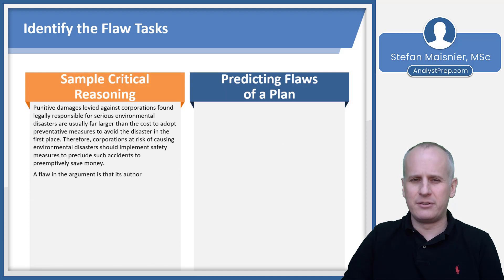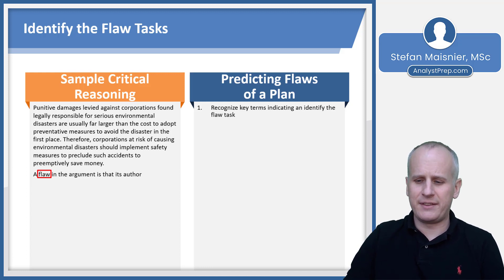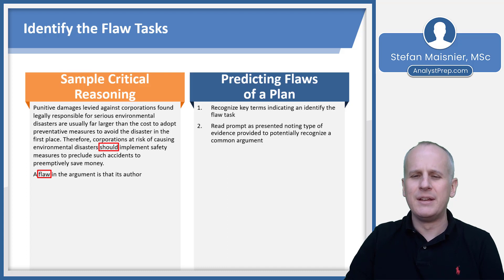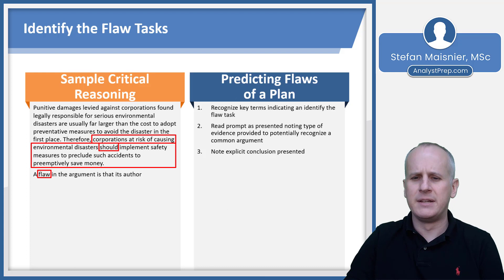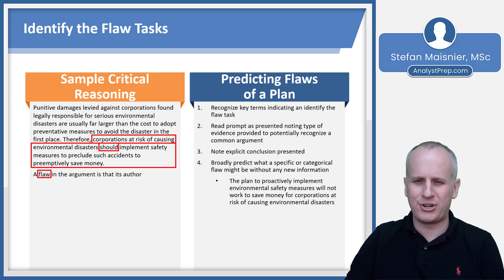Let's look at another sample argument — this will ultimately be a plan. The task reads: 'A flaw in the argument is that its author blank.' We recognize the key term flaw, indicating an identify-the-flaw task. The paragraph states: punitive damages levied against corporations found legally responsible for serious environmental disasters are usually far larger than the cost to adopt preventative measures to avoid the disaster in the first place. Therefore, corporations at risk of causing environmental disasters should implement safety measures to preclude such accidents to preemptively save money. The conclusion is clearly this surrounding plan, and the keyword should indicates a plan-type argument.